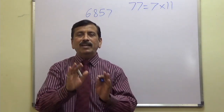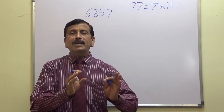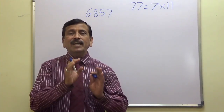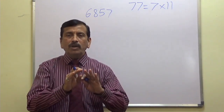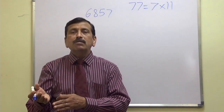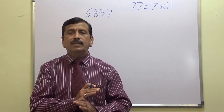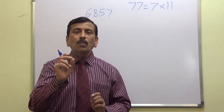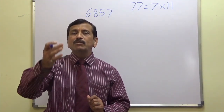77 is equal to 7 into 11. How are we going to use this rule of divisibility? If a number is divisible by 7 as well as 11, where 7 and 11 are co-prime factors of 77. Co-prime means they do not have anything common in them — they do not have any common factor. So we will check whether the number is divisible by 7 and also by 11.